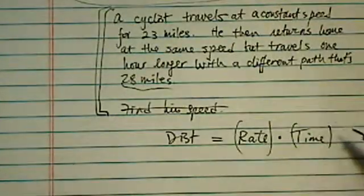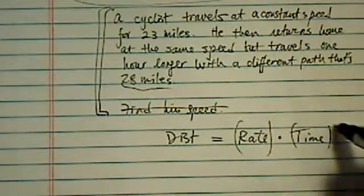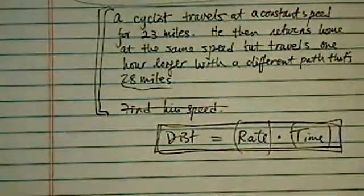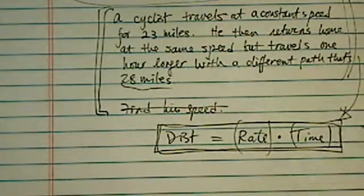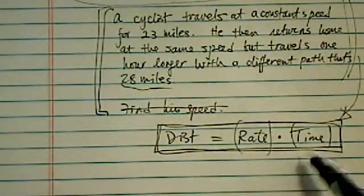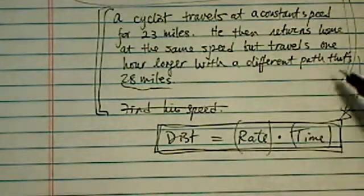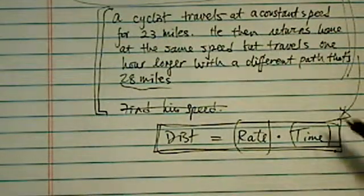Once again, we turn to our gambling analogy. This equation is kind of like the casino house. All those different methods, it's really just to get you to use this one concept. The casino tries to get you to gamble, to lose your money, and word problems are trying to get you to use the same thing, same formula, all the time.